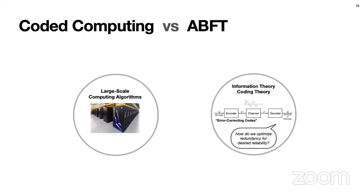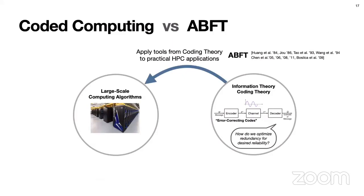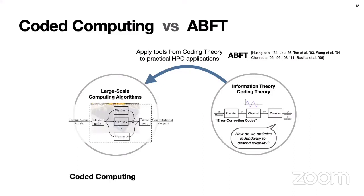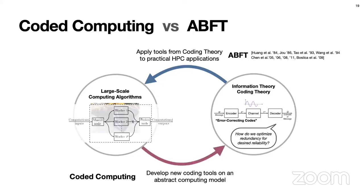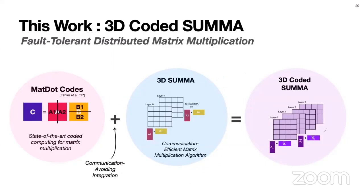Here is how coded computing is different from ABFT. ABFT was first proposed by Huang and Abraham to fight errors at the circuit level, and the approach there is usually checking off-the-shelf error-correcting codes available in coding theory and applying them to practical HPC algorithms. On the other hand, coded computing, which started in the information theory community, abstracts out the large-scale computing system and builds a simple theoretical model, then tries to develop new error-correcting codes designed specifically for this computing model. There is great synergistic effect in going both directions, which is what we are trying to do in this work.